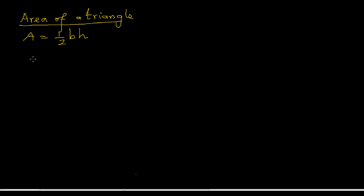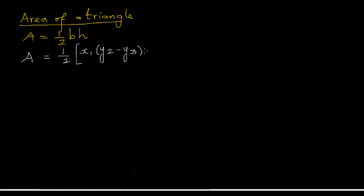The formula I'm going to write is actually based on this basic formula. The area is half times — it's very logical and orderly. It is: x1 times (y2 minus y3), plus x2 times (y3 minus y1), plus x3 times (y1 minus y2). It's a very cyclic form.